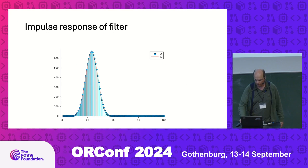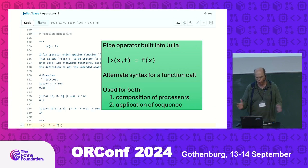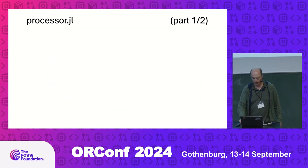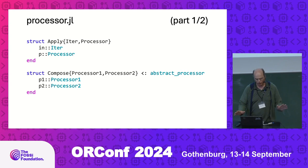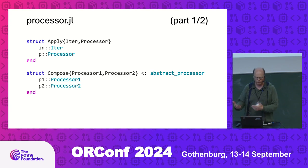The pipeline operator is just something built into Julia — all it is is a function call, just a more convenient way of calling a function when you want to call a function of a function of a function. So it's just composition. I'm going to show you the entire code behind this. Basically it's based on two structures: one for the application of an iterator to a processor, and one for combining two processors into a composition.